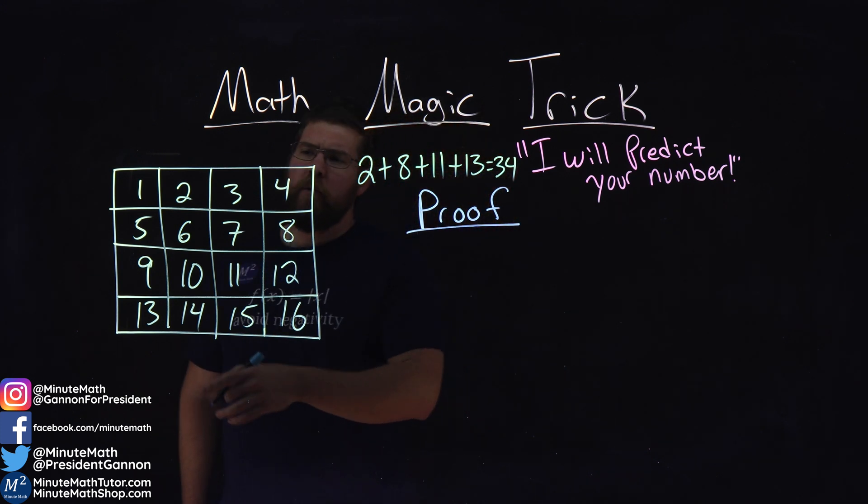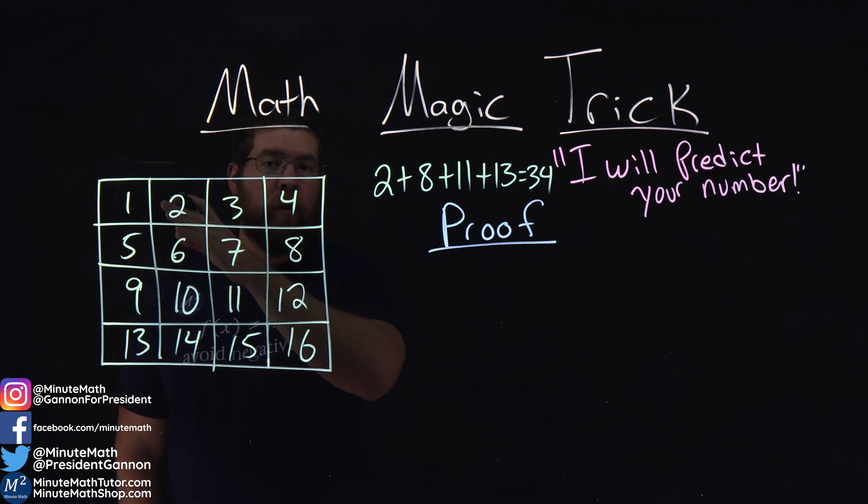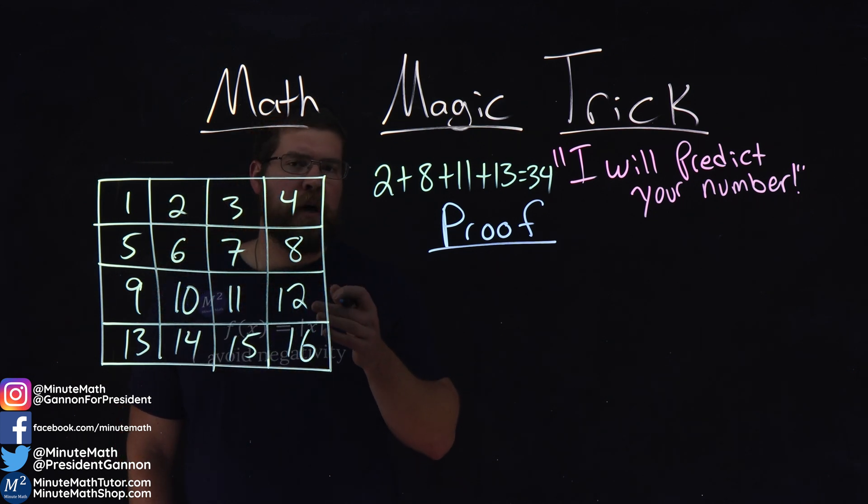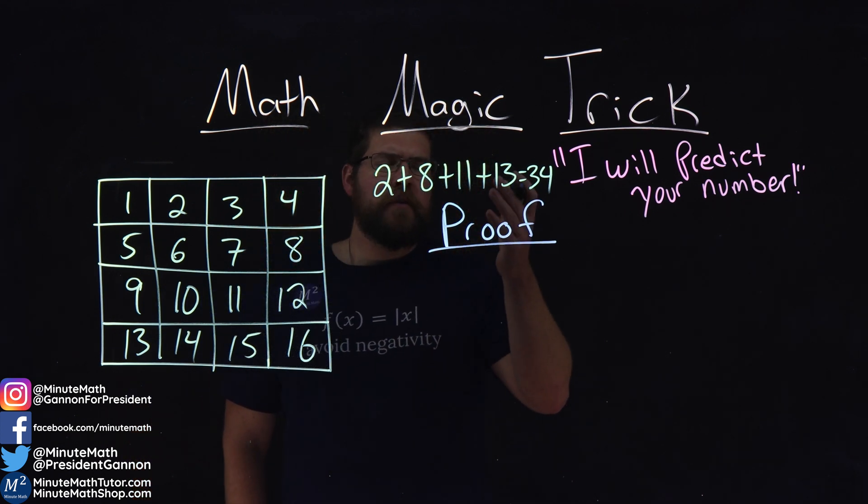To recap, you would pick one number within this chart, and the next number can't be from the same row or column. You pick four numbers continuing that rule. When you add up your numbers, you always get 34.